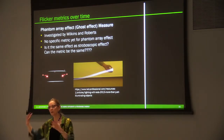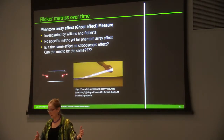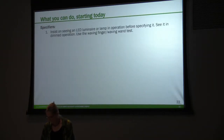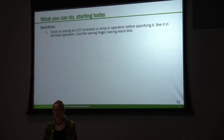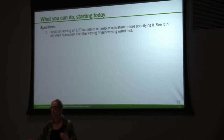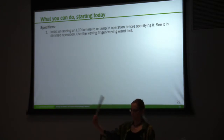Can we have a metric that covers both the phantom array effect and the stroboscopic effect? Let's hope this happens soon. Specifiers — what do you do? You need to insist on seeing an LED luminaire in operation before specifying it. You want to see it in dimmed operation because there's an interaction between the dimmer and the LED. As it's being dimmed, it may amplify the flicker effect — the TLA, the temporal light artifact.